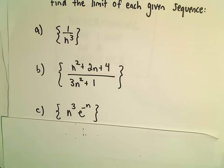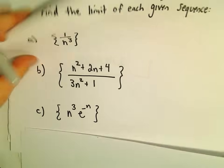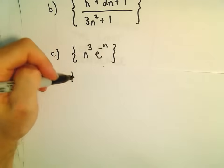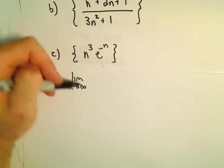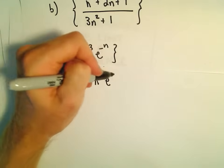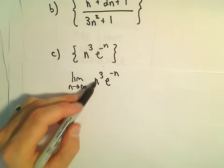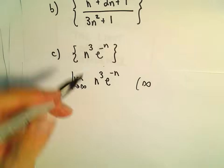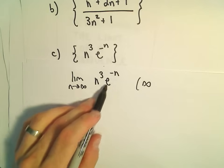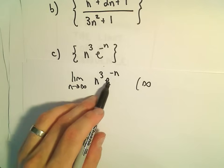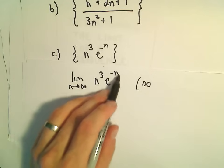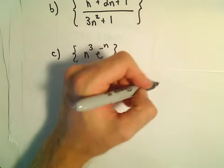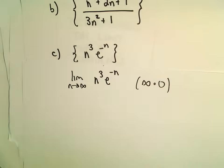Last but not least here, we have n to the third times e to the negative n. If we do a limit as n goes to infinity, as n goes to infinity, n to the third will go to infinity. But we'll get e to the negative infinity. And if you take e and raise it to a big negative number, that gets close to 0. So this is going to be an indeterminate product.